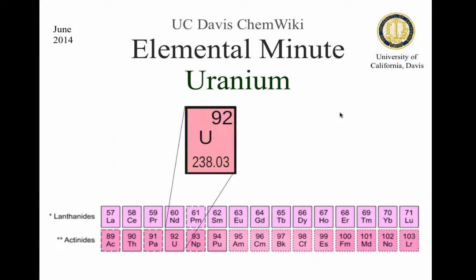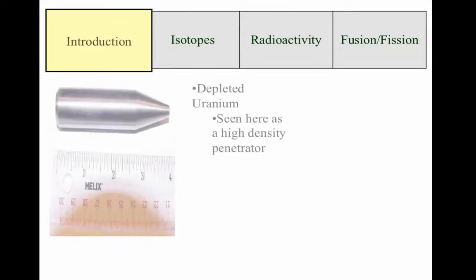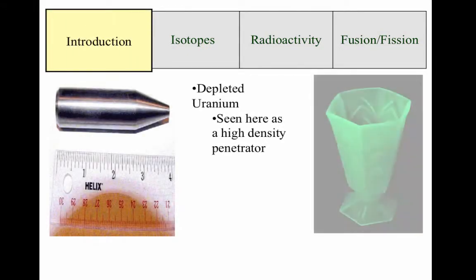Uranium is 92 on the periodic table and is part of the actinide series. In the military, depleted uranium is commonly used as a high density penetrator.